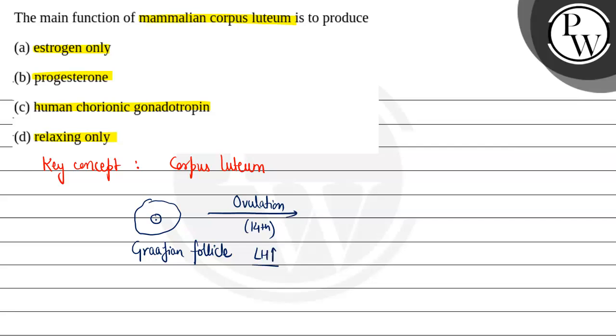Graafian follicle se, secondary oocyte release hota hai, aur ye transfer hota hai to the oviduct.